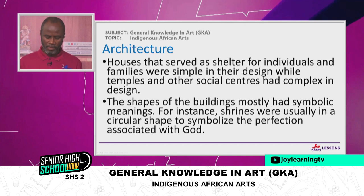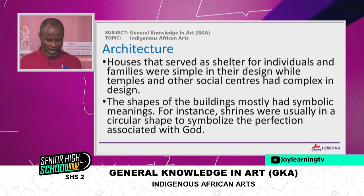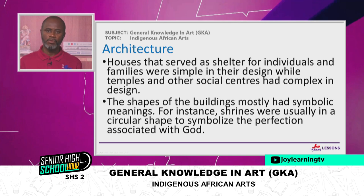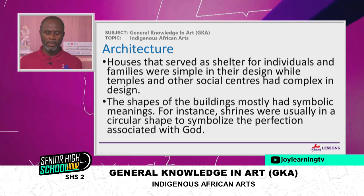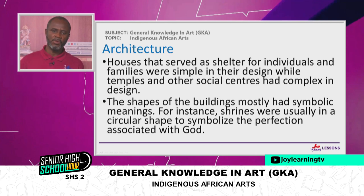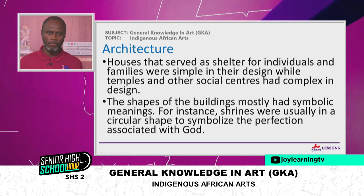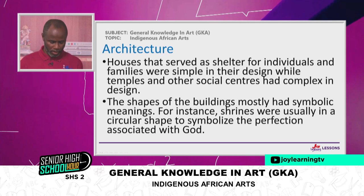Houses that serve as shelter for individuals and families were usually simple in design, but temples and shrines, which are more of social centers, had more complex designs. The shapes of buildings usually symbolize meaning. For example, shrines were usually circular in form, and the symbolism is that anything circular deals with perfection of God or is associated with God.